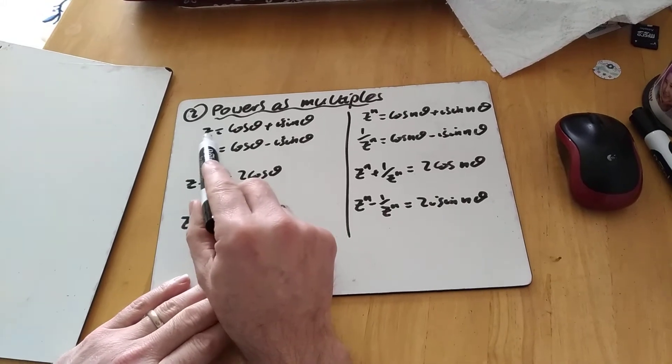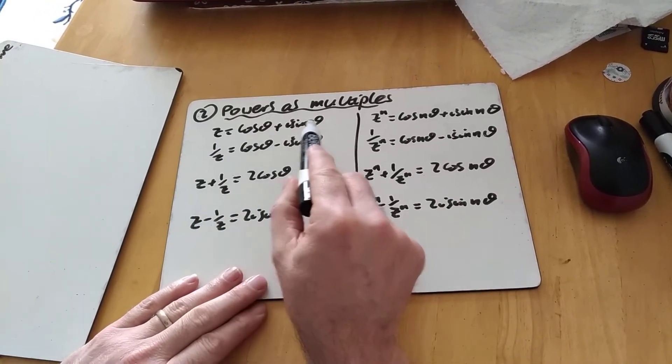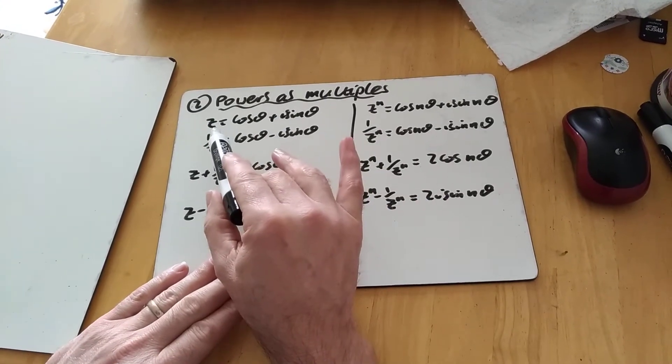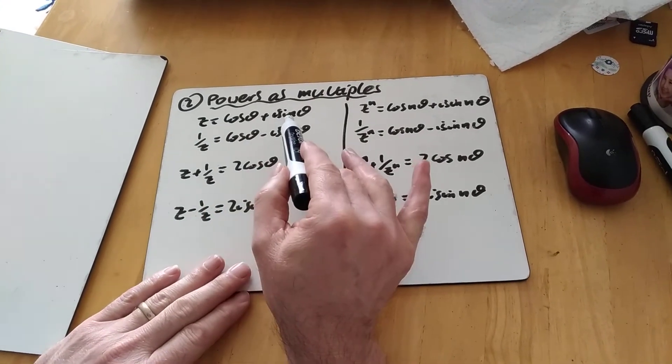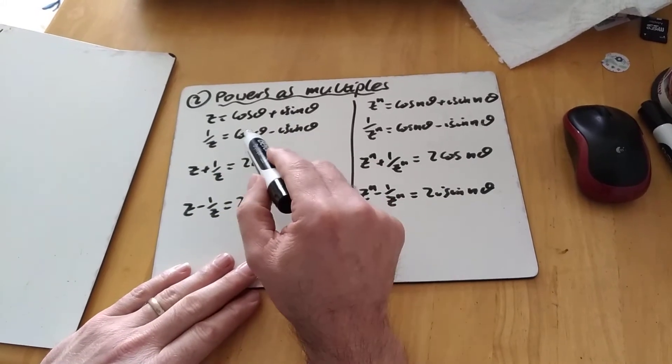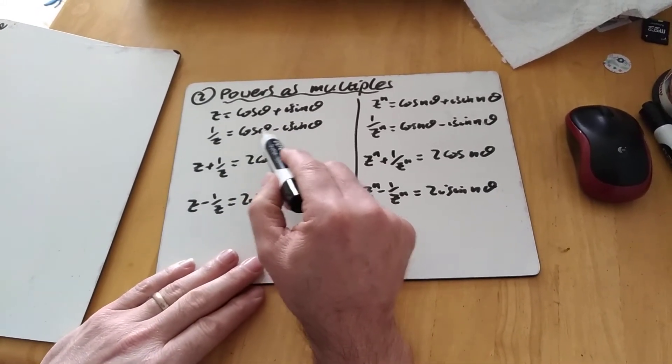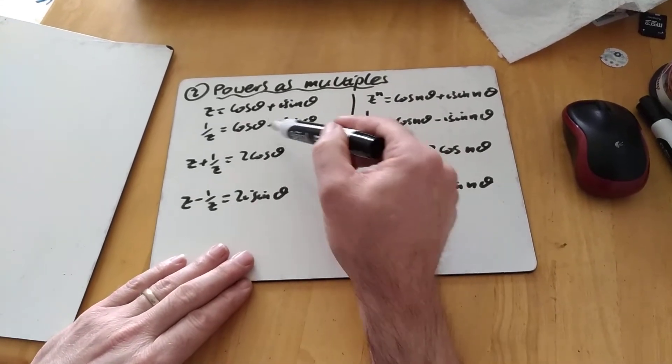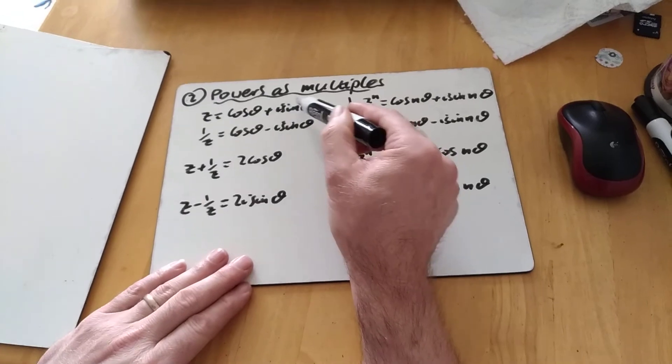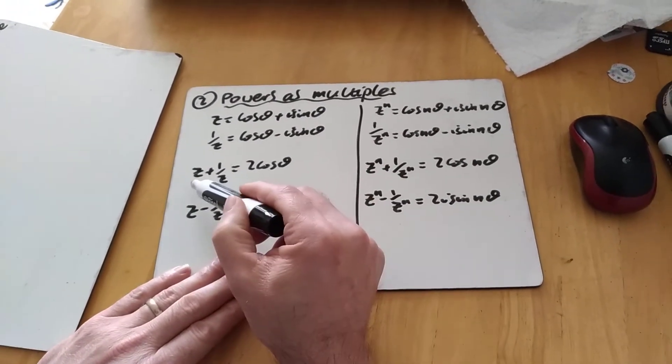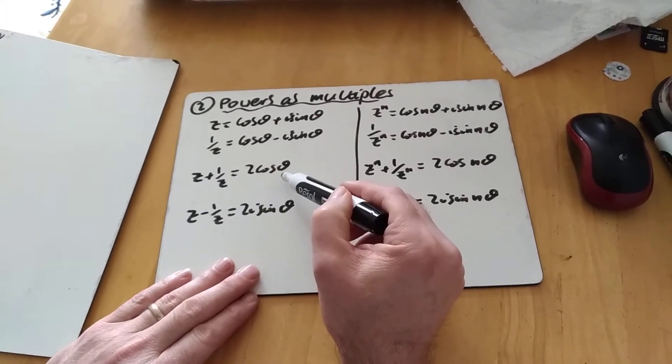So if we have our complex number z equals cos theta plus i sine theta, we're treating initially as z is a complex number with argument equal to 1. 1 over z by De Moivre's Theorem we've seen can be written as cos theta minus i sine theta. And we've got simultaneous equations. When we add the two equations, we eliminate the two sine theta terms and we just end up on the other side with 2 cos theta. So what do we get? z plus 1 over z equals 2 cos theta.